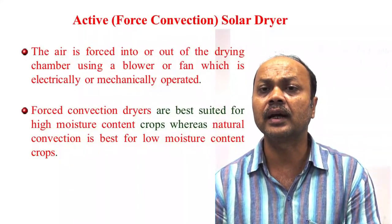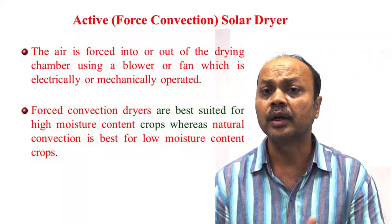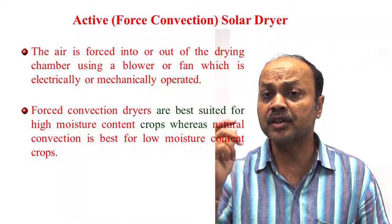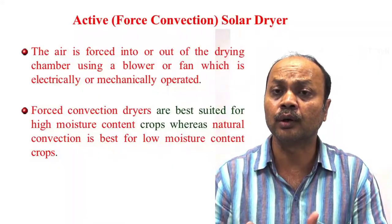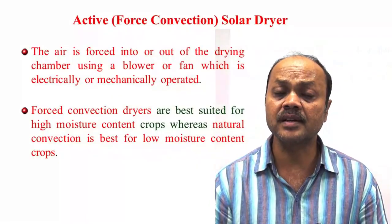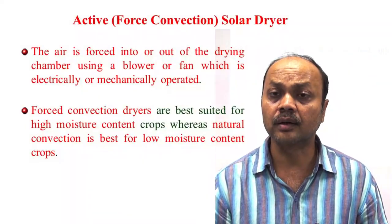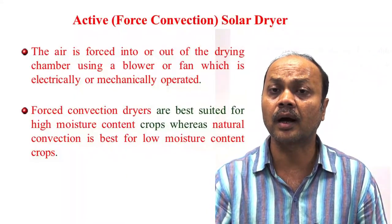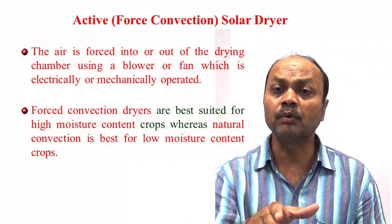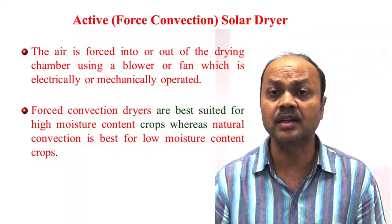In active solar drying, we are using a blower or fan to move the air. It will be faster than natural convection. Whenever you have high-moisture food, normally you go for forced convection. Temperature is important, but relative humidity is also important. When the produce loses moisture, the humidity inside increases. So it is essential that we bring in less humid dry air from outside into the drying chamber. The drying rate will be much faster than the passive system. Active drying is more efficient in comparison to passive drying.